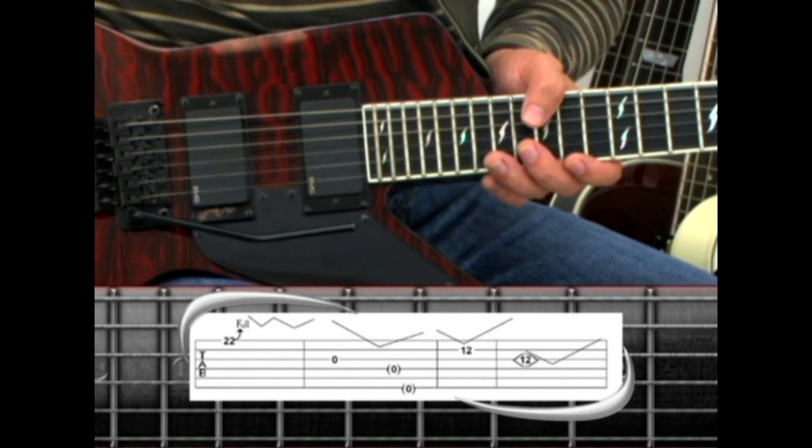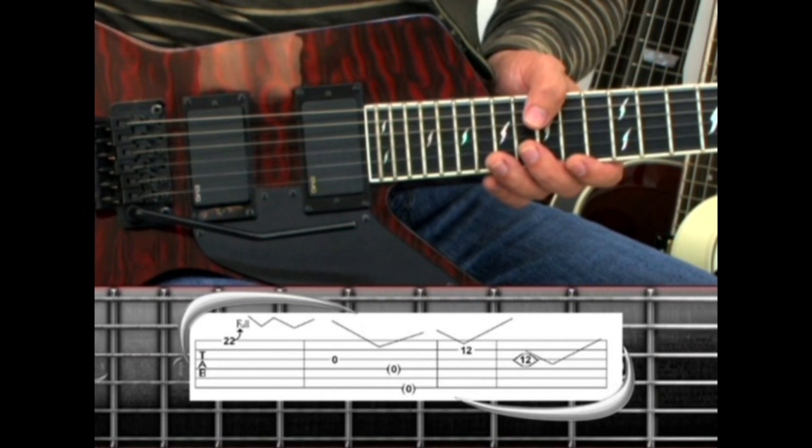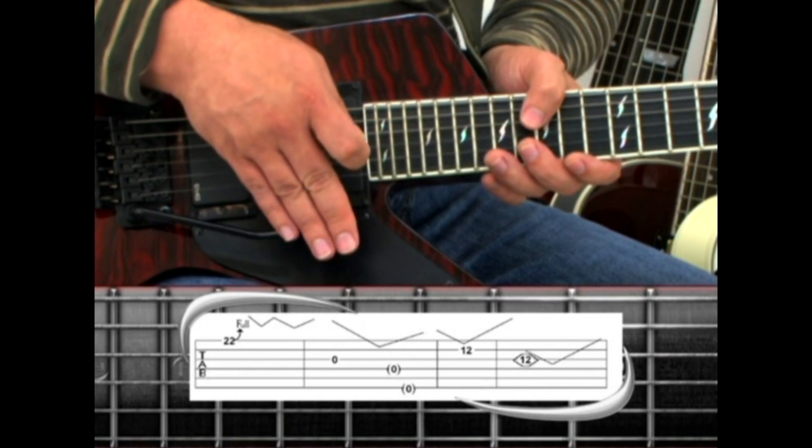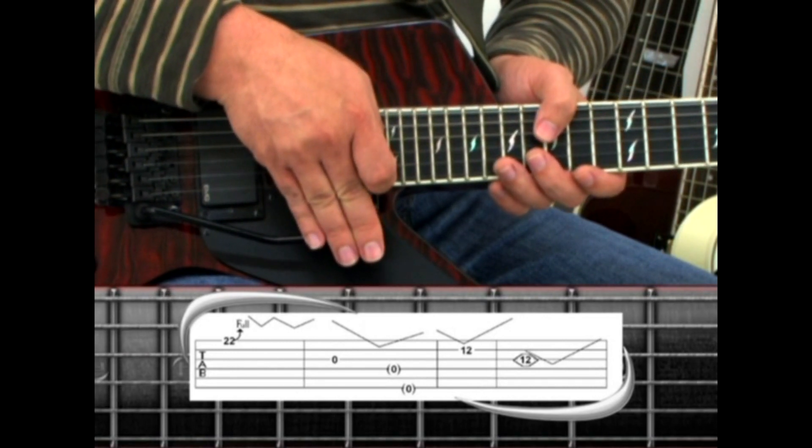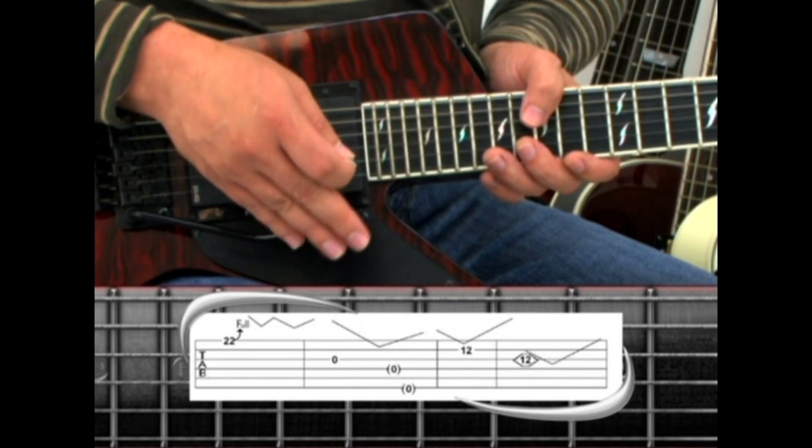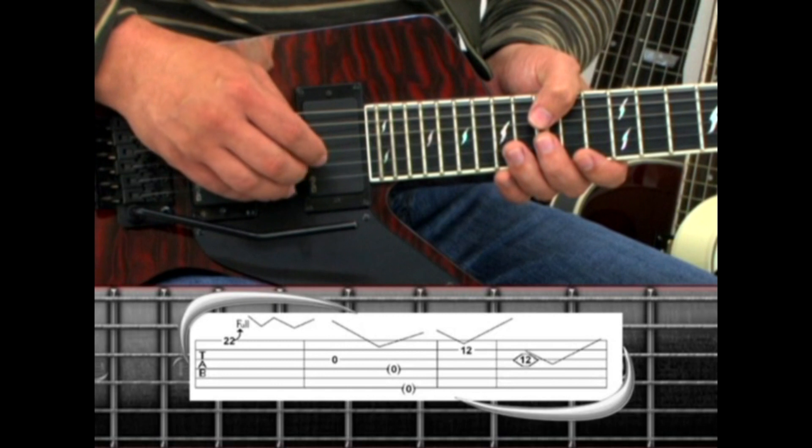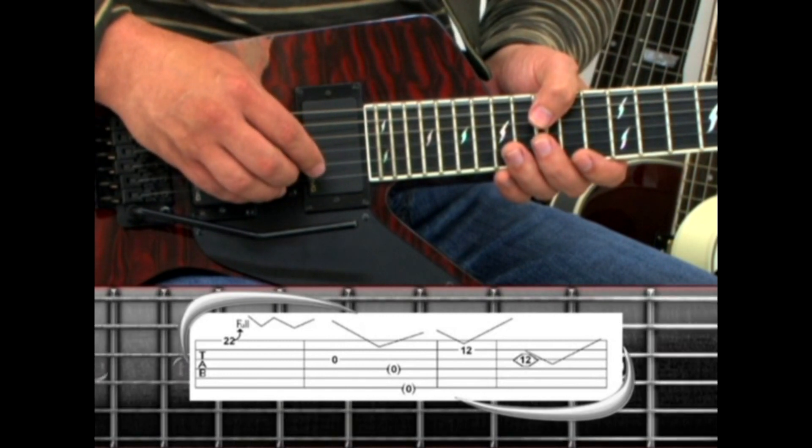The next technique is a dive bomb, where you hit an open string, in this case the third string, and depress the bar. The notes in parentheses give examples of open strings you can strike before you return the bar to its upright position.